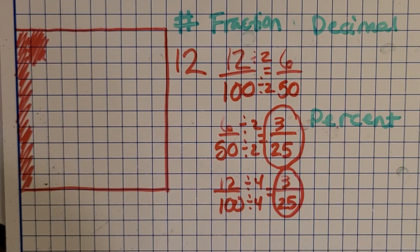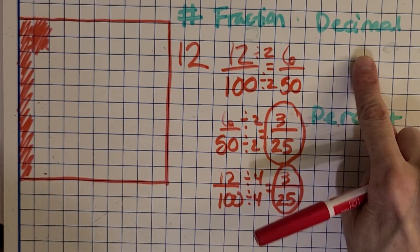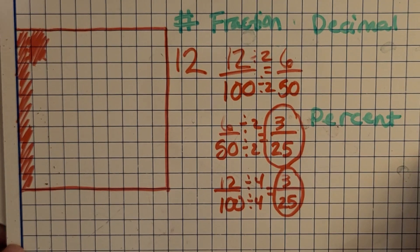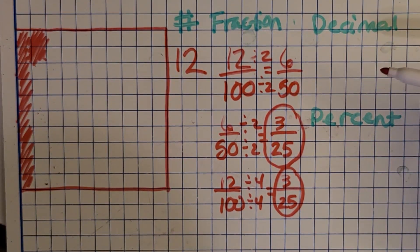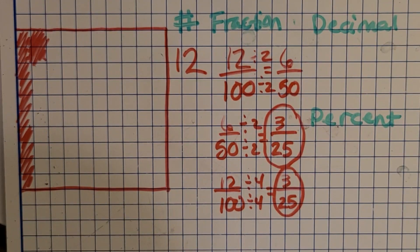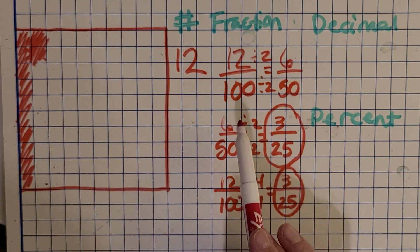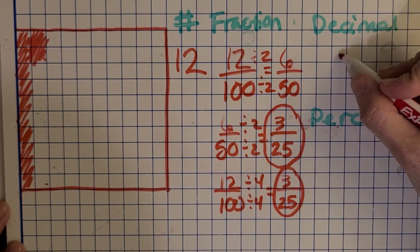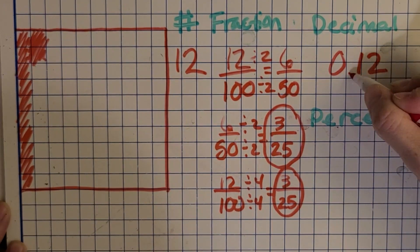Now, what decimal do you think of when you see this fraction? My favorite way to do that is just say it out loud. So 12 hundredths, it sounds like 0.12.